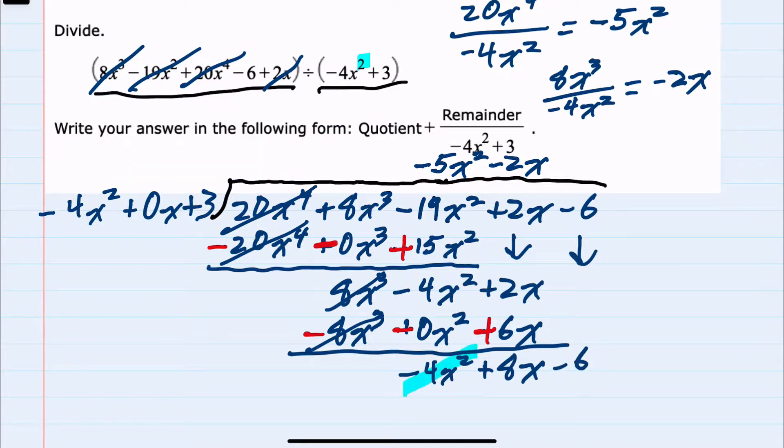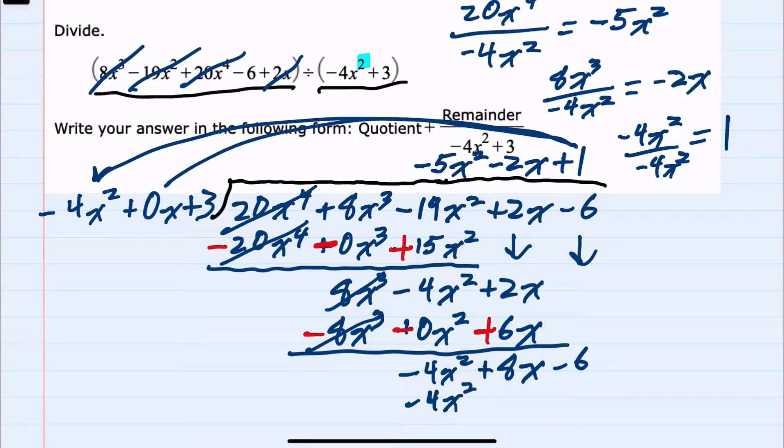Look at the leading coefficients once more. We have a minus 4x² and a minus 4x². So this time the division gives us 1. My next term is a plus 1 that I then multiply. 1 times a minus 4x² is a minus 4x². 1 times a 0x is 0x. 1 times the plus 3, a plus 3.